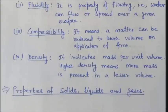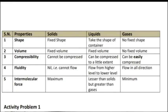Now we will discuss the properties of solids, liquids, and gases. As you can see, a table is given. The first property is shape. Solids have a fixed shape — for example, a brick is a solid and has a fixed shape. Liquids do not have a fixed shape; they take the shape of the container in which they are placed. Similarly, gases do not have a fixed shape; they also take the shape of their container.